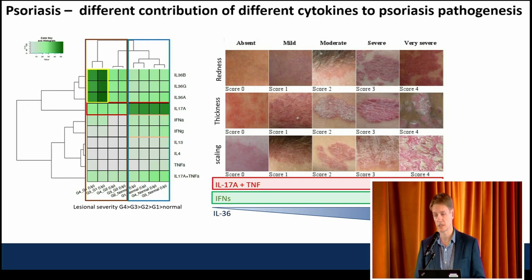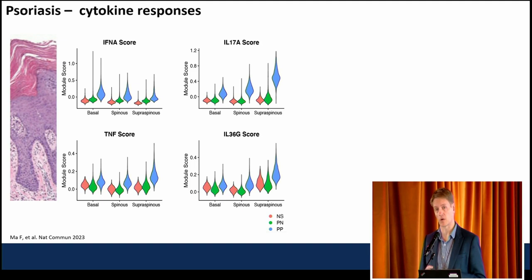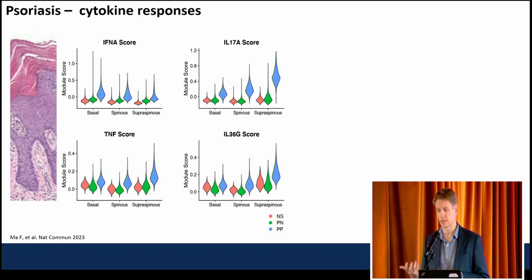Where in the skin are these signals most active? The epidermis is not a simple structure — it's a complex tissue with different levels of differentiation and inflammatory responses. Comparing healthy, non-lesional psoriasis, and lesional psoriasis, the interferons really dominate in the basal layer of the psoriatic epidermis. In contrast, IL-17A, TNF, and IL-36 are really in the supraspinous compartment — that's where things are most active for most of these cytokines.